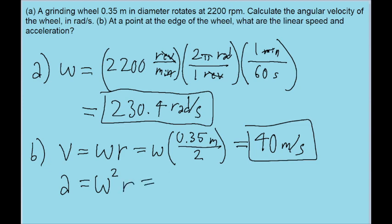So again, the angular velocity will be the same value we found in part A, and the radius will be the same value we used in part B, 0.35 meters divided by two. If we put that into our calculator, we find an acceleration of about 9300 meters per second squared. So that is the acceleration.